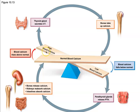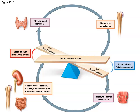When our blood calcium levels get too high, the thyroid will secrete calcitonin, which causes the blood to take up calcium and bring us back to a normal calcium level. If our blood calcium level gets too low, the parathyroid gland releases PTH, causing bones to release calcium, kidneys to reabsorb calcium out of urine, and intestines to absorb calcium from food — bringing blood calcium back up to normal levels.